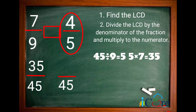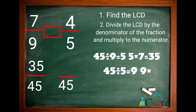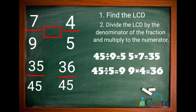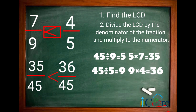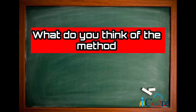Next is 4 over 5. 45 divided by 5 is 9. 9 times 4 is equal to 36. The converted fractions will be 35 over 45 and 36 over 45. We can now compare them. Since 35 over 45 is less than 36 over 45, thus 7 over 9 is less than 4 over 5.